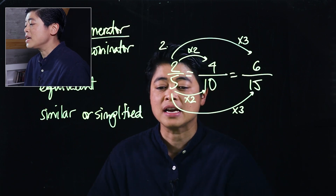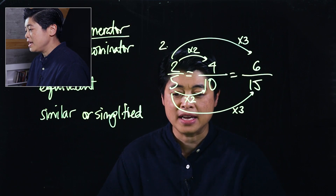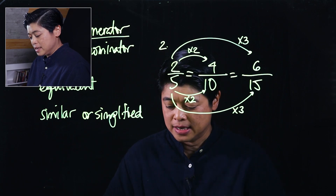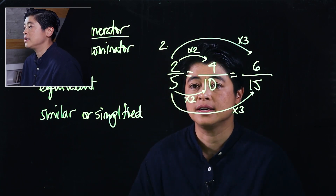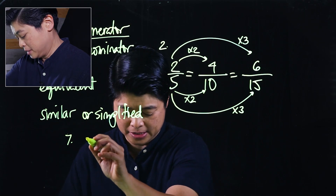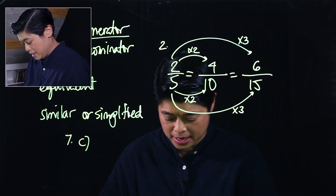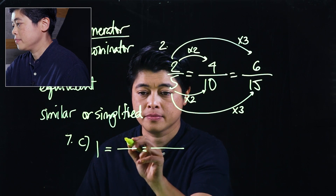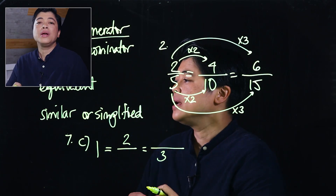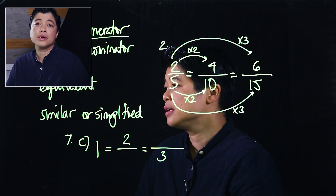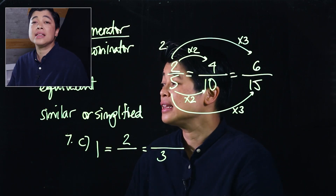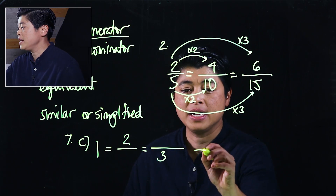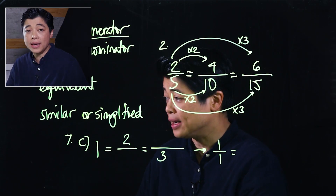The next set of problems comes from page 62. Problem number seven, letter C. We know that any whole number — in this case, one — is technically a fraction because it's one over one.